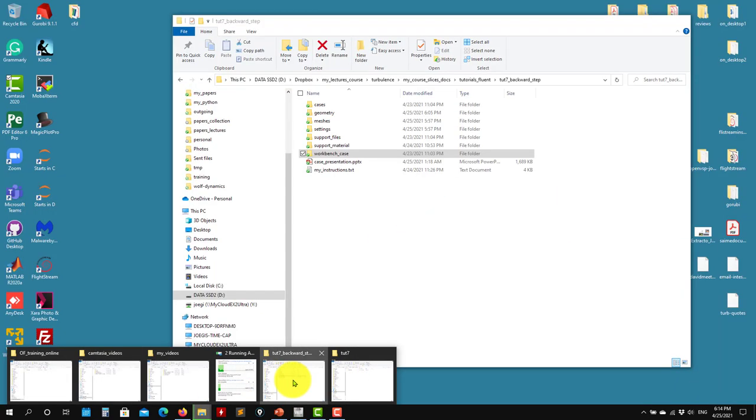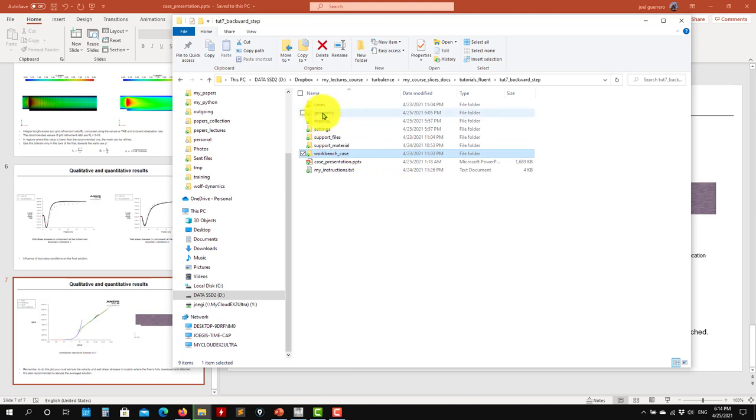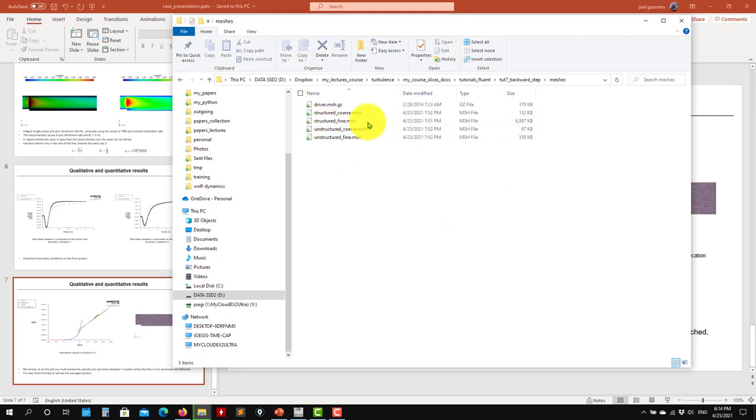I will also give you the meshes already converted and the settings. For those not using this version of Fluent, the 2021, you can download the meshes and then you have the setting files that can set up the case automatically. It might happen that some actions will give you problems because these settings are used in 2021, but it doesn't matter - in all versions those options that don't exist won't be applied and will just give you a warning.